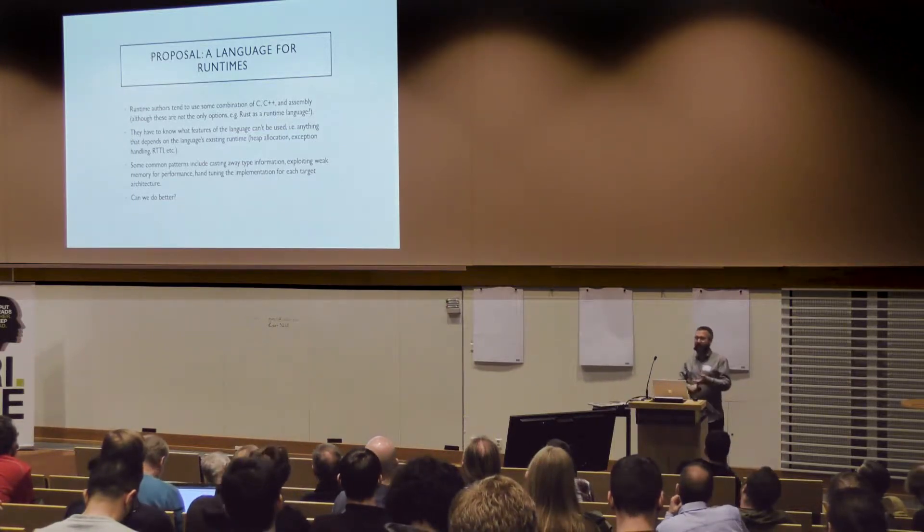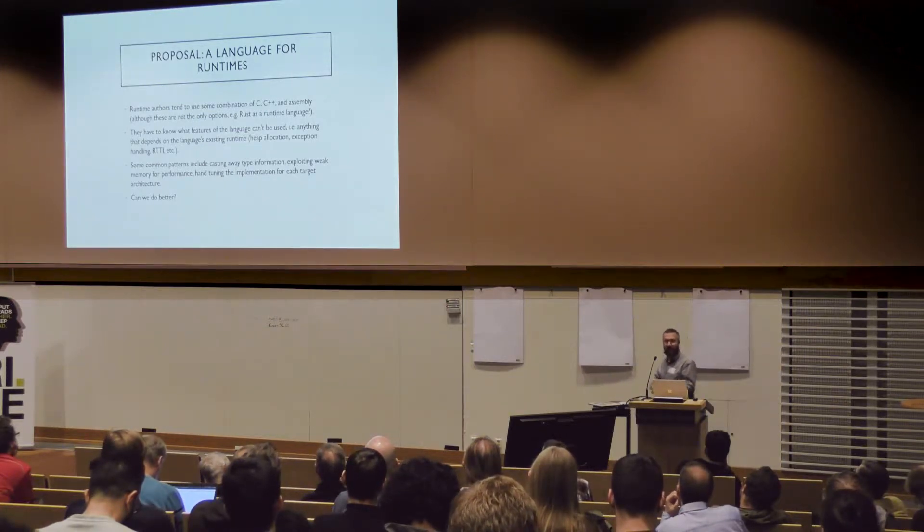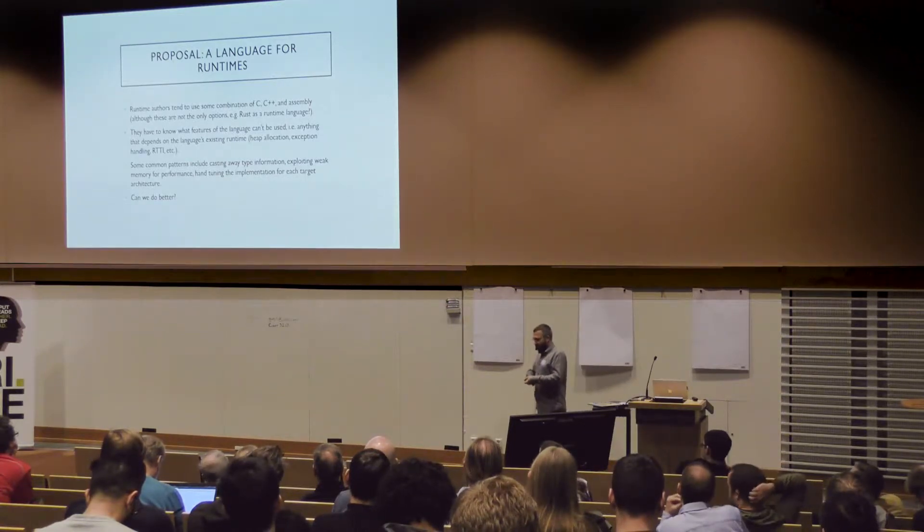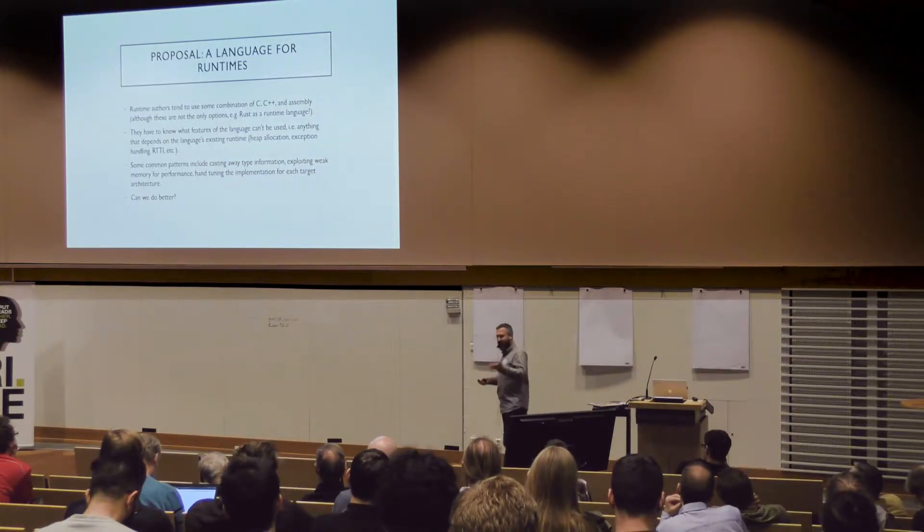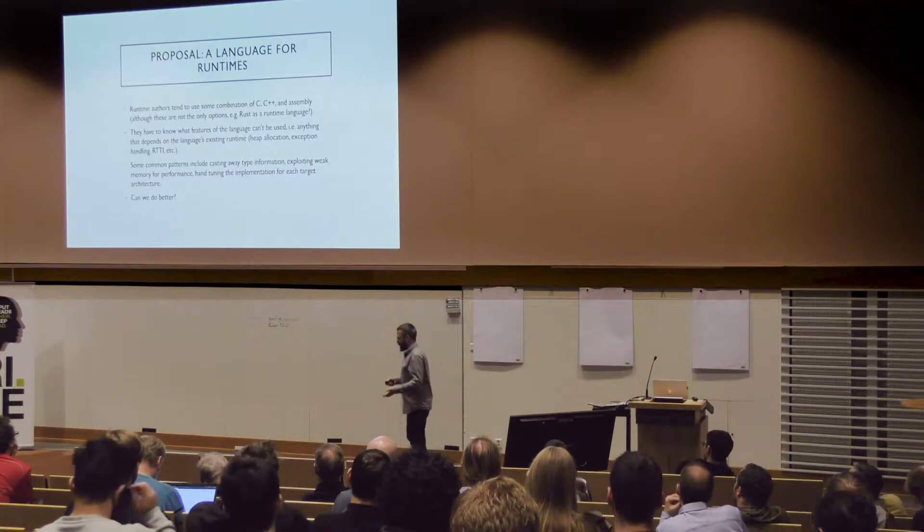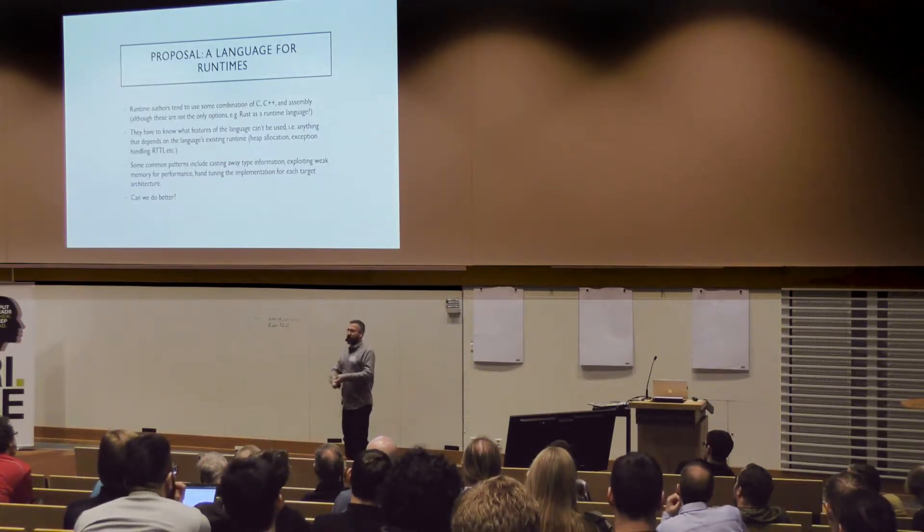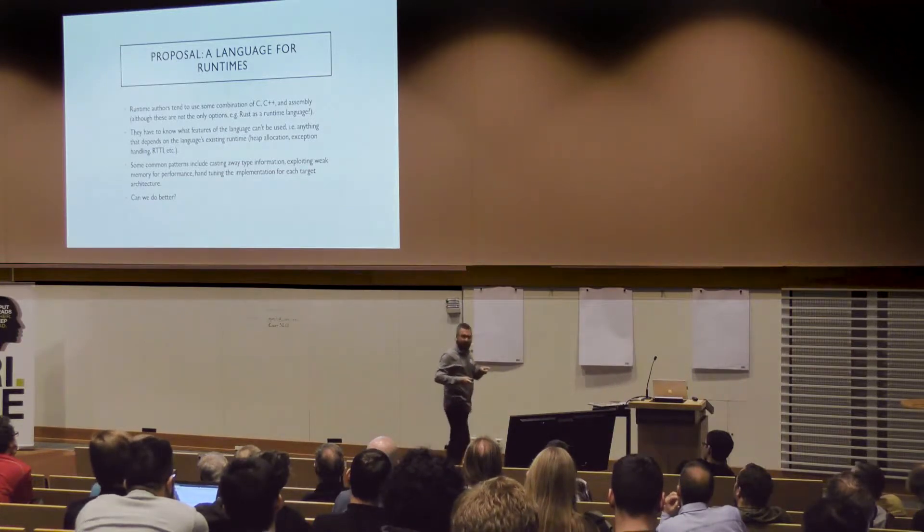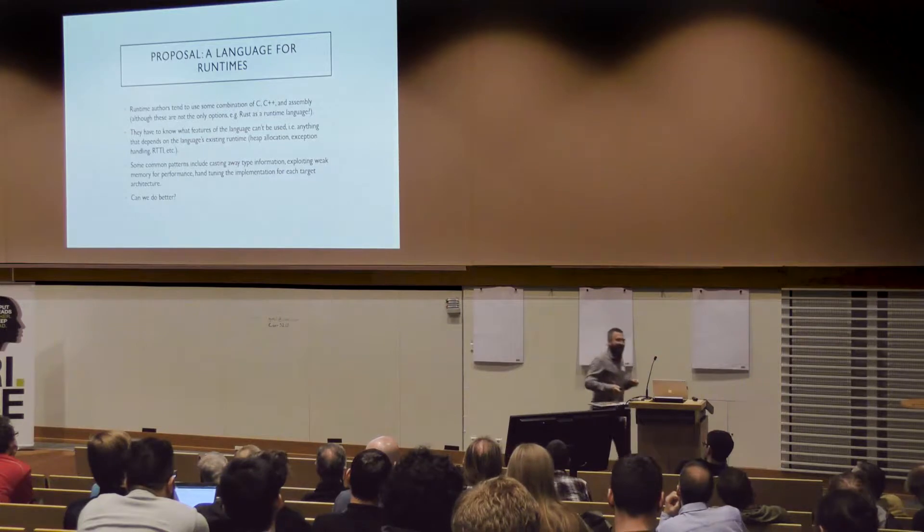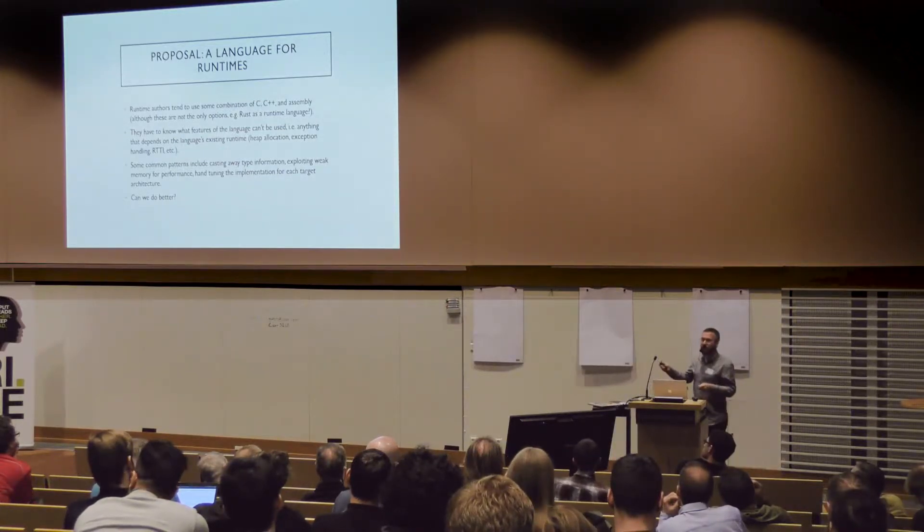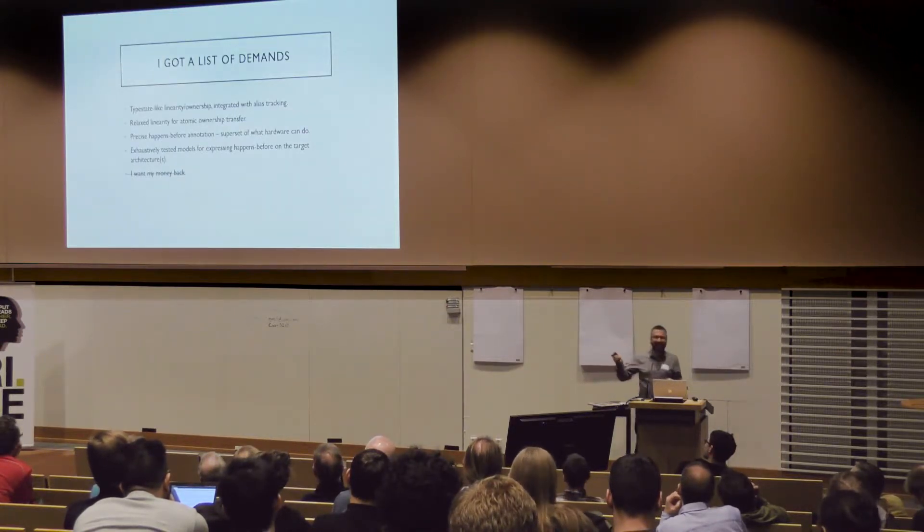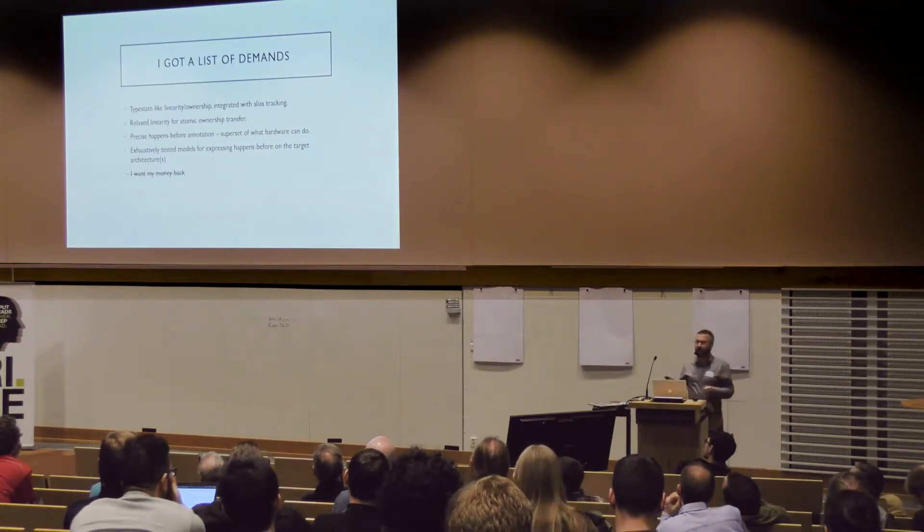So why do we use these languages? And some of the patterns that we use there, when we're writing runtimes, explains why we use these languages. Casting away type information, exploiting weak memory. How about hand tuning implementations for target architectures? That's a big deal. But there's also huge amounts of very low level bit twiddling. I was chatting with Joe this morning about modular arithmetic, and he very rightly pointed out that modular arithmetic is, on average, a bug. But if you're writing a runtime, it's not. You're depending on modular arithmetic on known bit width integer types in order to get high performance runtimes. Most other cases, it's a bug. So that's interesting. Can we do better than the tools that we have right now? Well, I got a list of demands. That's what I've got. What do I need if I'm going to do this? And this is sort of an outline of what I'm going to talk about.